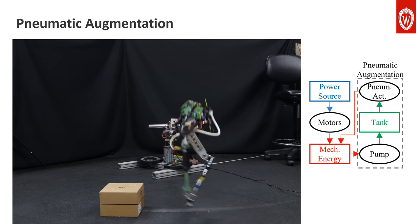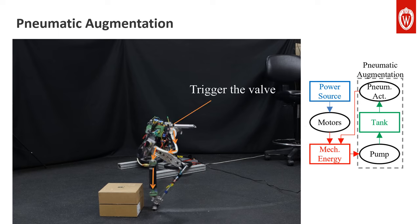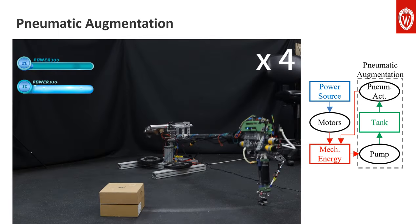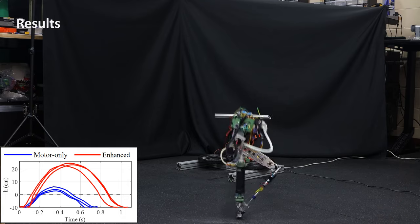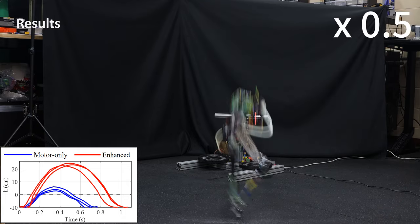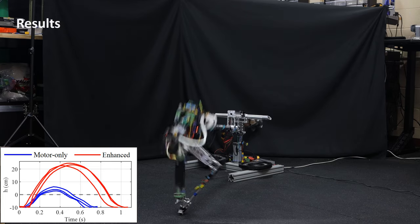For all hopping behaviors, the trajectories are optimized via direct collocation and stabilized by task space position and force controllers. Without the pneumatic augmentation, the electric motors alone can realize a maximum apex height of around 4.3 cm on average.